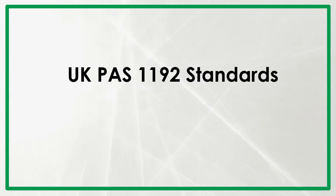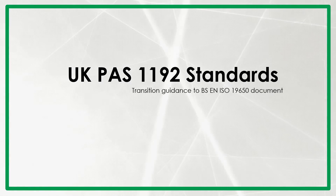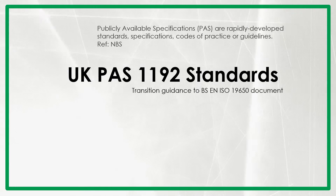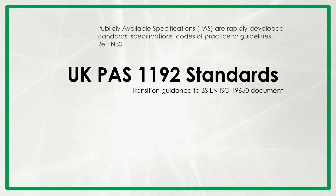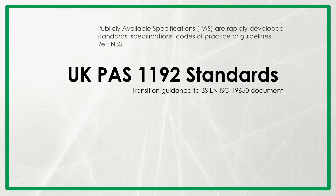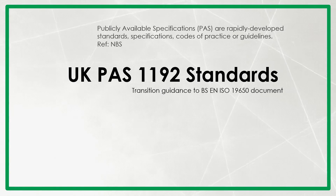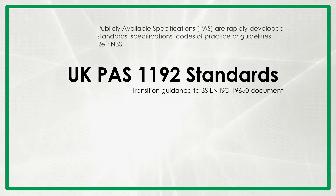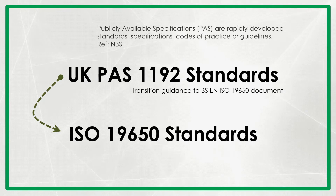The initial BIM standard used in the UK was called PAS 1192, which was a transition guidance to the current BSEN ISO 19650 standard. PAS, or publicly available specifications, are guidelines, codes of practice or standards that are fast developed to fulfill immediate needs of the industry. After two years, they will be checked on different cases and revised to form ISO standards.